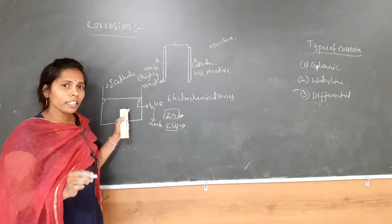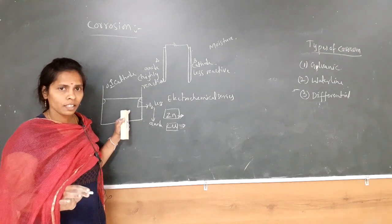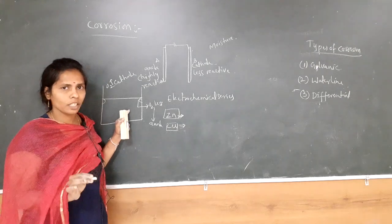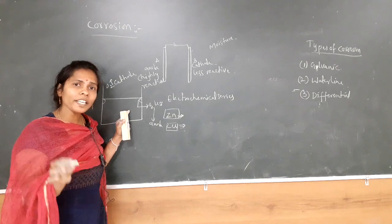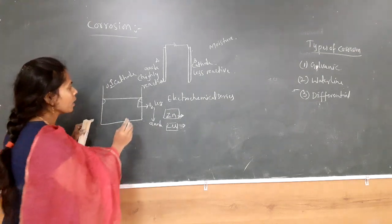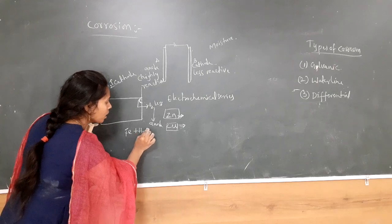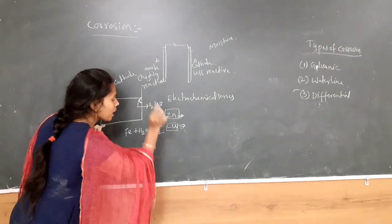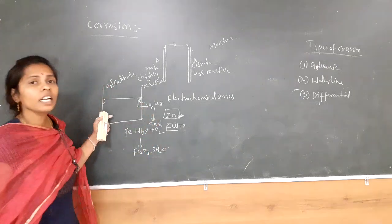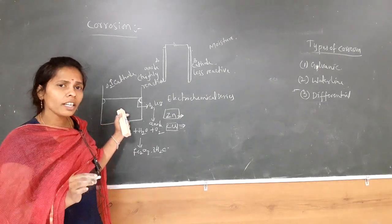Waterline corrosion is the corrosion that takes place exactly below the waterline due to the difference in oxygen concentration. The position where oxygen concentration is less acts as the anode and undergoes corrosion. The position where oxygen concentration is more is protected from corrosion. The product formed is Fe₂O₃·3H₂O — rust. The main reason is the difference in oxygen concentration.